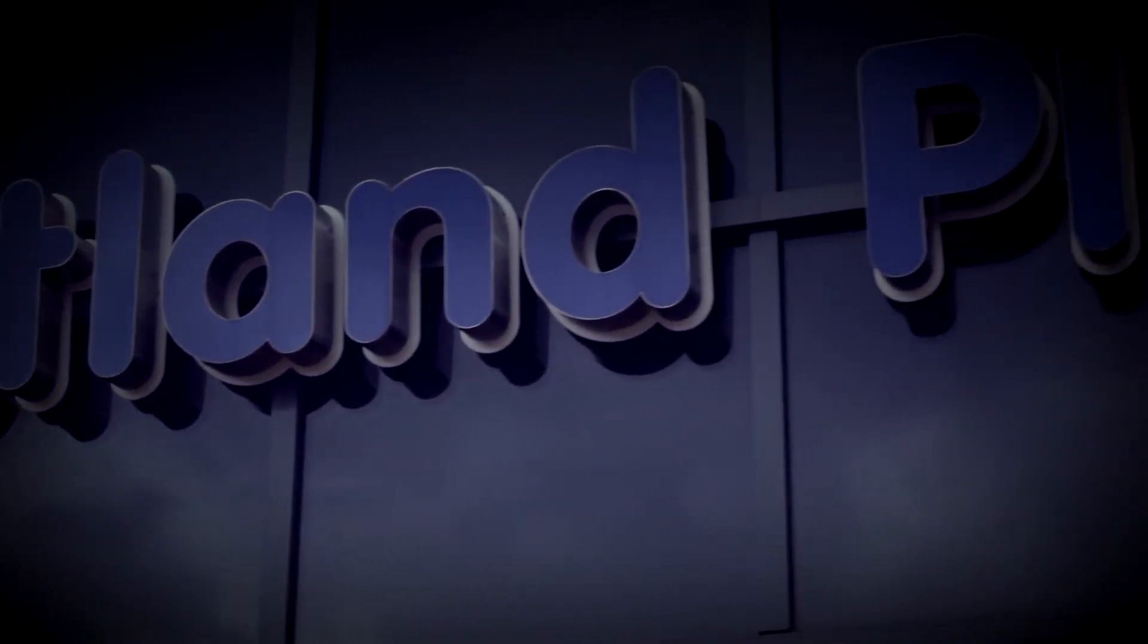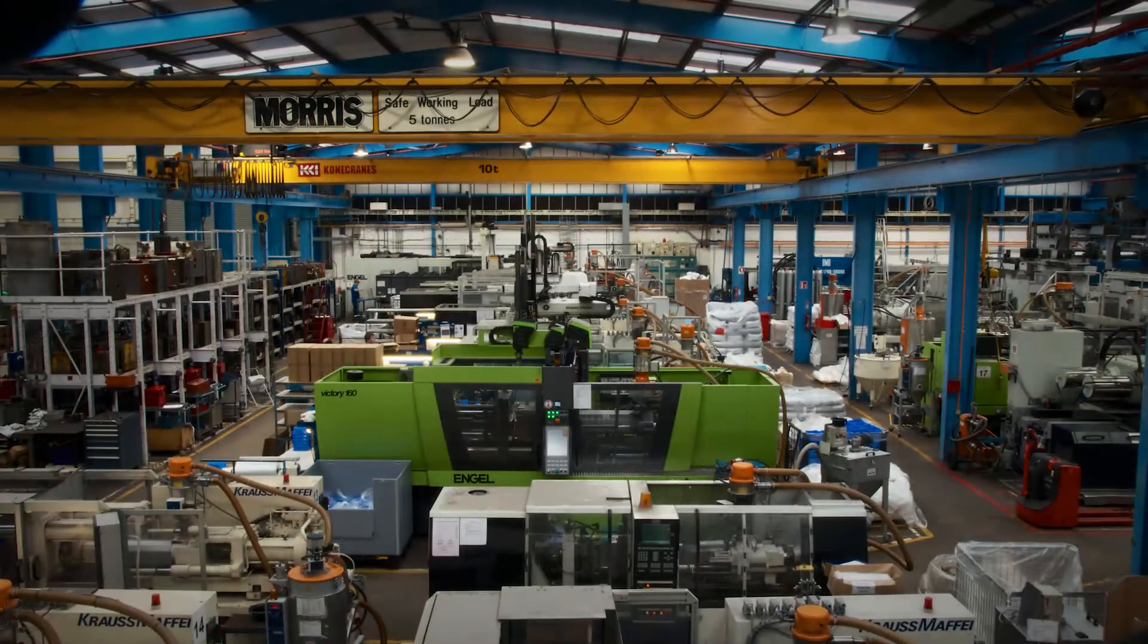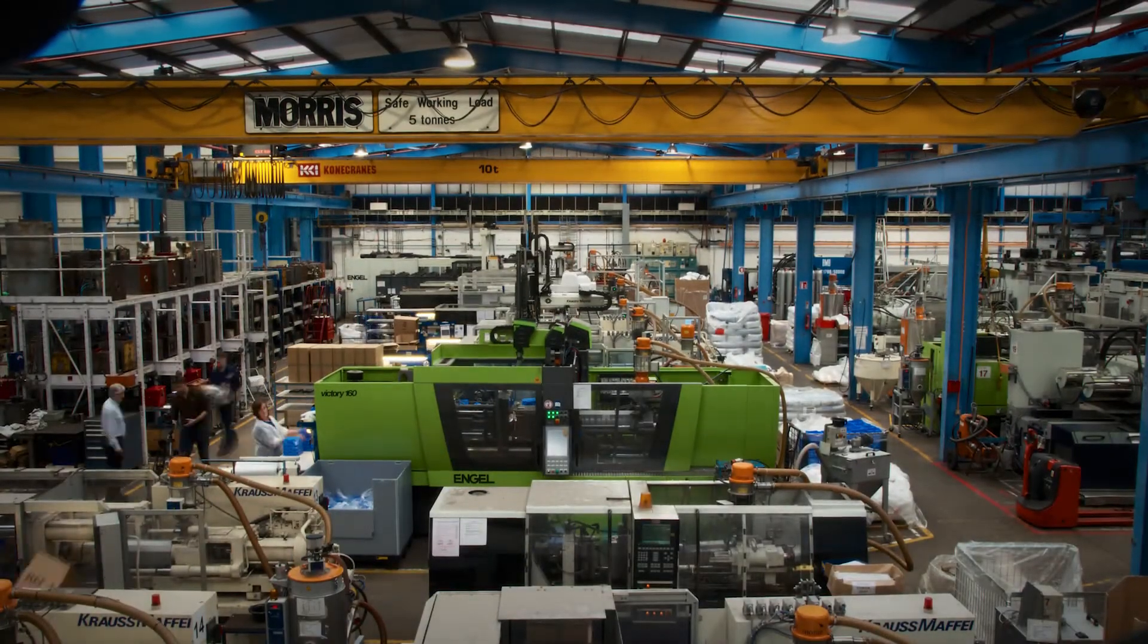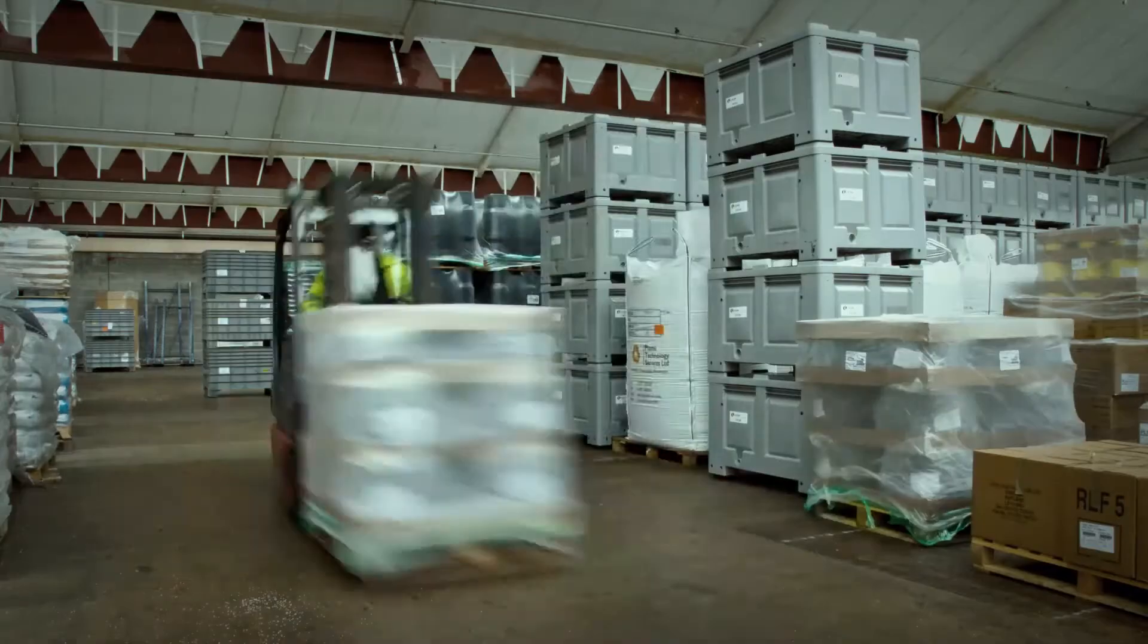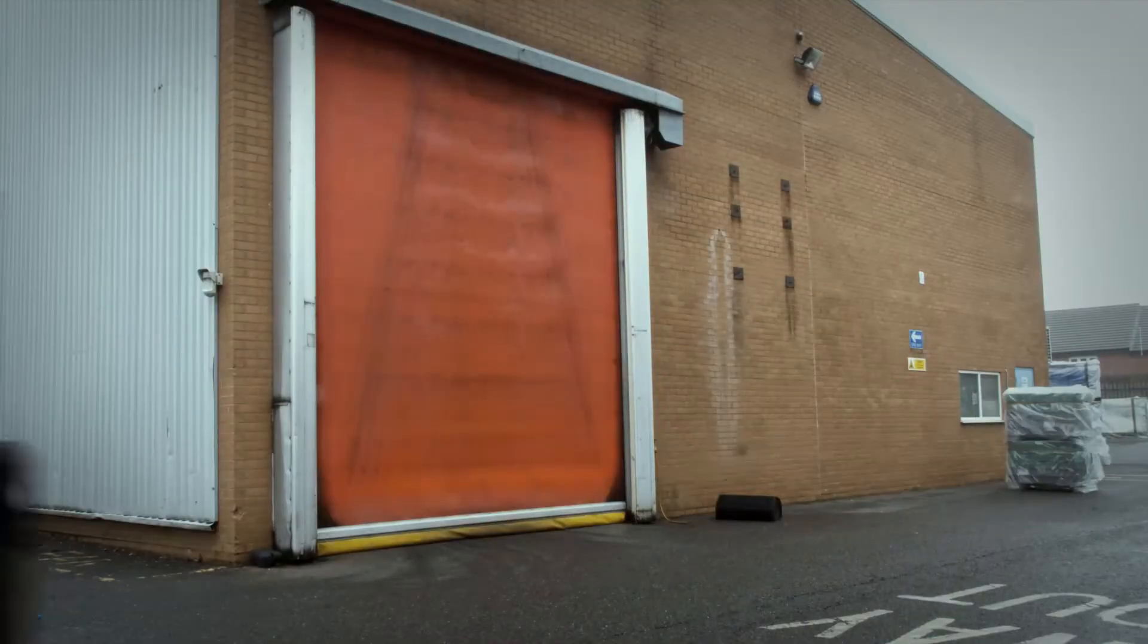Rutland Plastics is one of the leading molders in the UK in terms of expertise in different applications and in the use of different polymers for specialist applications.